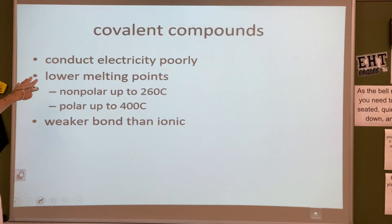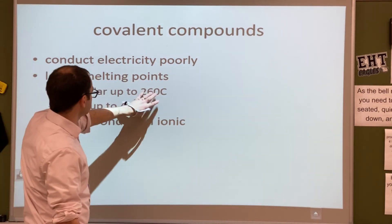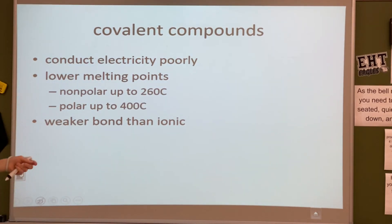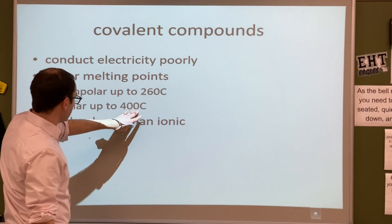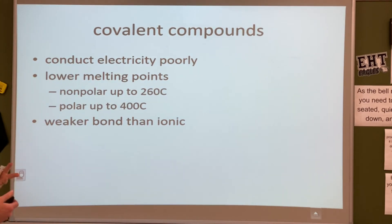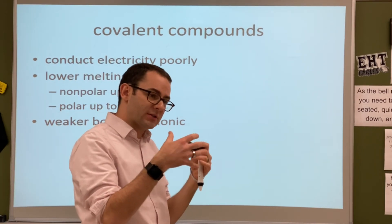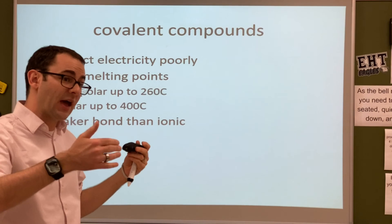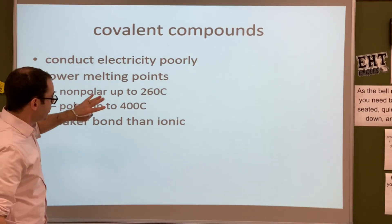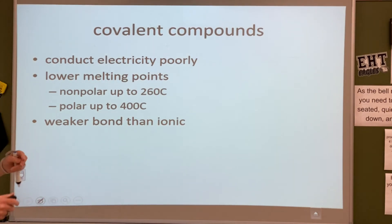Some facts about covalent compounds. They conduct electricity poorly. They have lower melting points and boiling points than ionic compounds. So if it's nonpolar, its melting point is going to be up to 260 degrees Celsius, and then if it's polar, the ion up to about 400. Why do you think polar would have a higher melting point? Why do you think it would be harder to melt polar molecules, or to boil polar molecules as opposed to nonpolar? Yeah, Jacob? Yeah, they have a higher energy because of the attraction between their molecules, right? So they have hydrogen bonds, so they're going to be more attracted to each other. If you don't have hydrogen bonds, they're not going to hold easily, alright? And again, it's just weaker than ionic, alright?